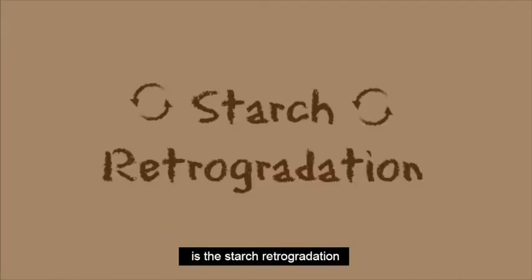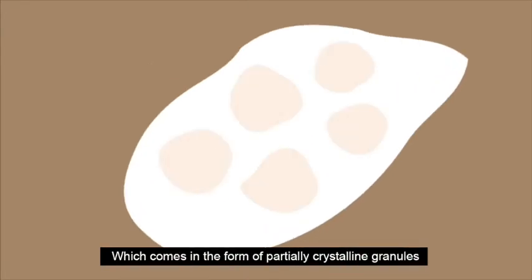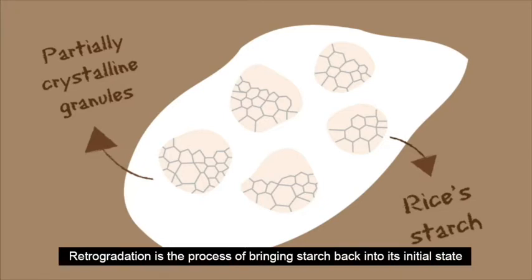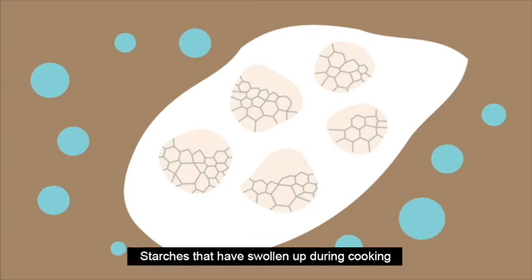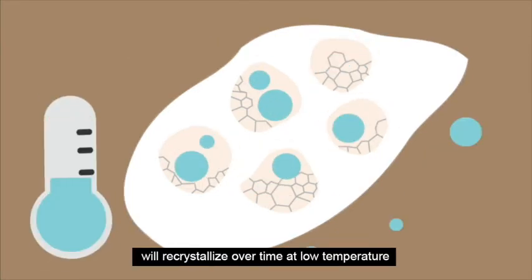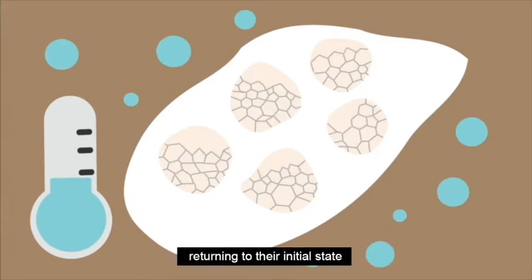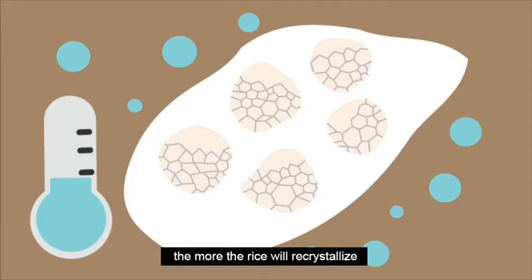The second phenomenon that takes place is starch retrogradation. Rice is high in starch content, which comes in the form of partially crystalline granules. Retrogradation is the process of bringing starch back into its initial state. Starches that have swollen up during cooking will recrystallize over time at low temperature, returning to their initial state, forcing water out and turning the rice firmer. The longer the rice grain rests at a lower temperature, the more the rice will recrystallize and the firmer the rice grain will become.